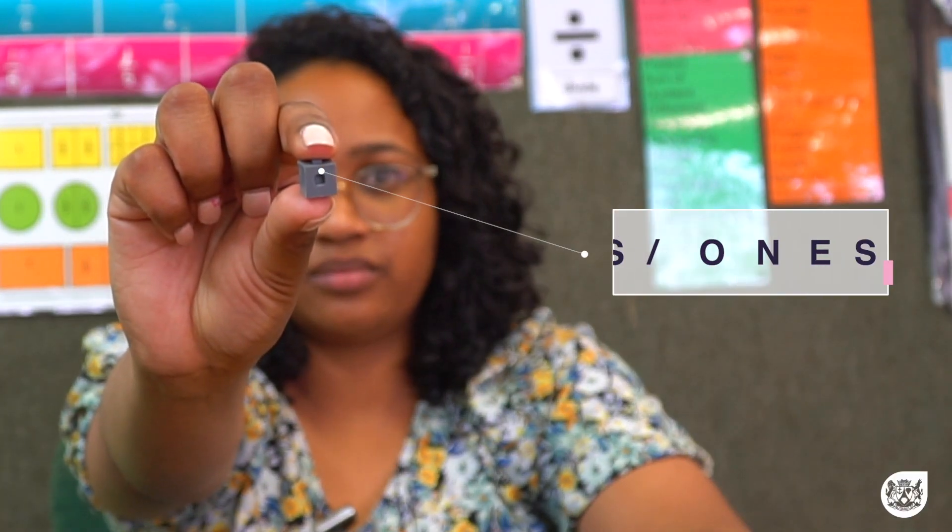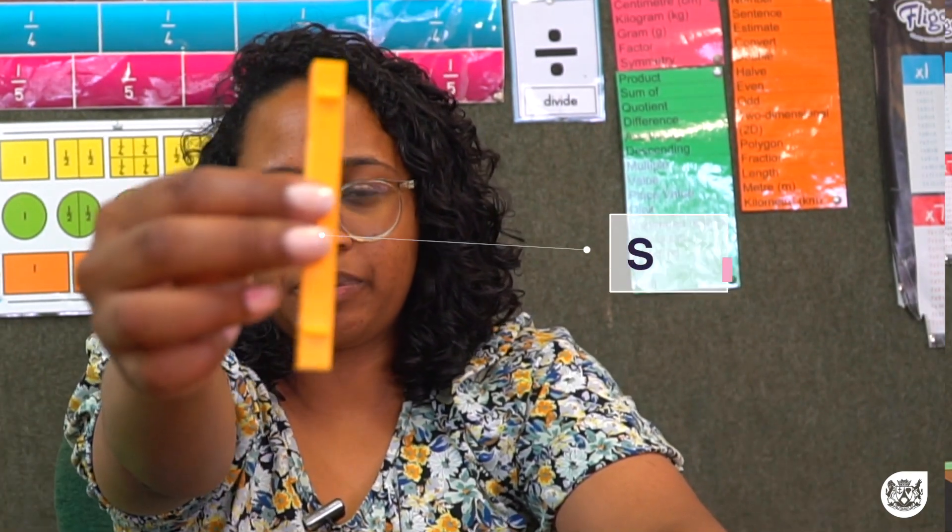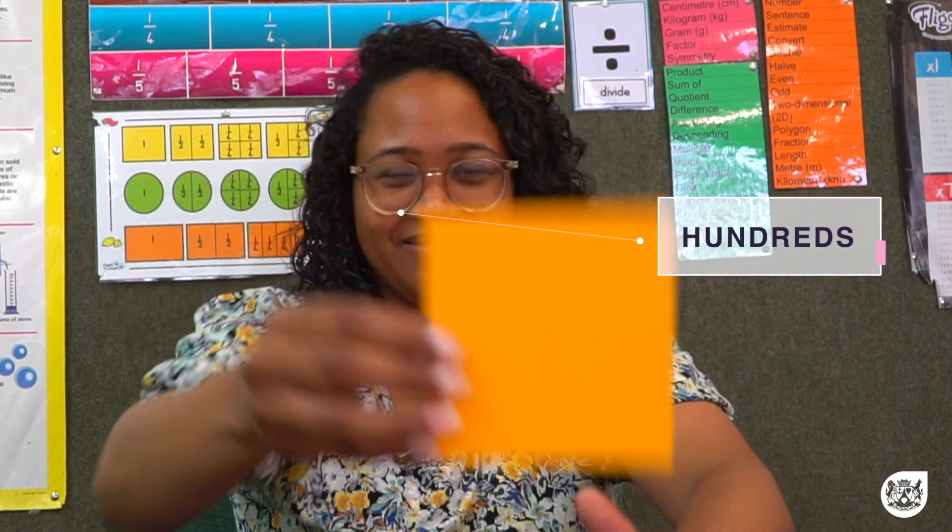Remember, when it comes to our base 10 blocks, the little cube represents our units, the rods represent our 10s, and the block represents our 100s.